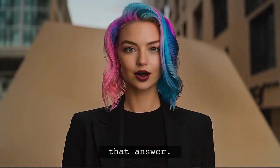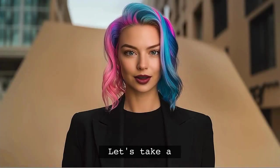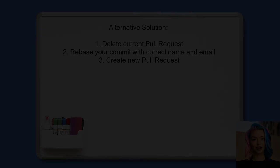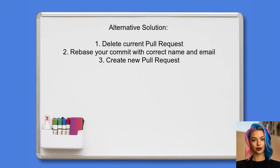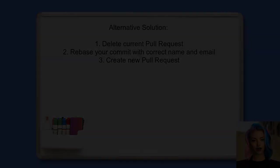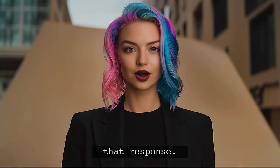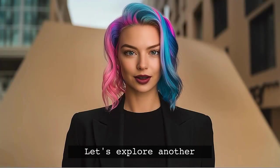Then push the changes with git push origin branch -f to overwrite the branch. Let's take a look at another approach. An alternative approach to changing the author of a commit involves using rebase: first, delete the current pull request; then rebase your commit with the correct name and email; finally, create a new pull request.